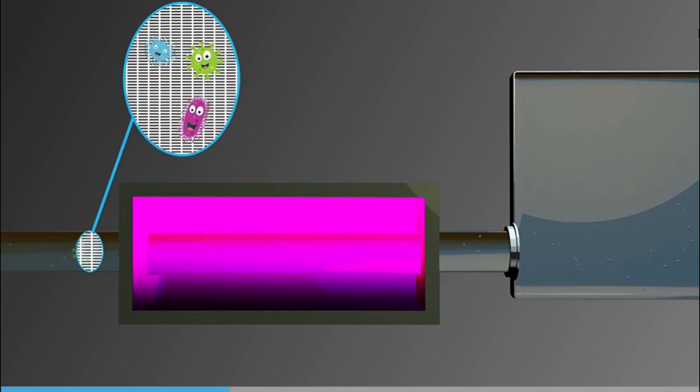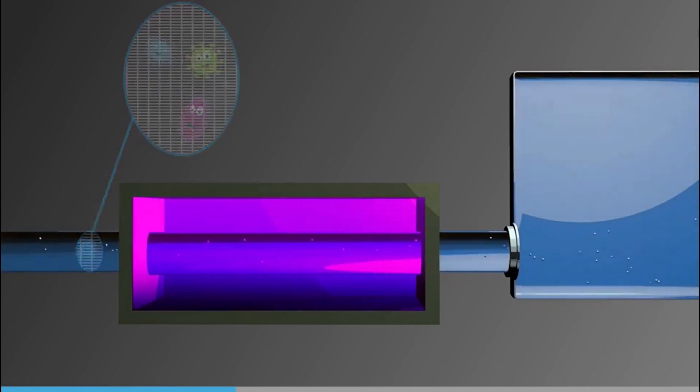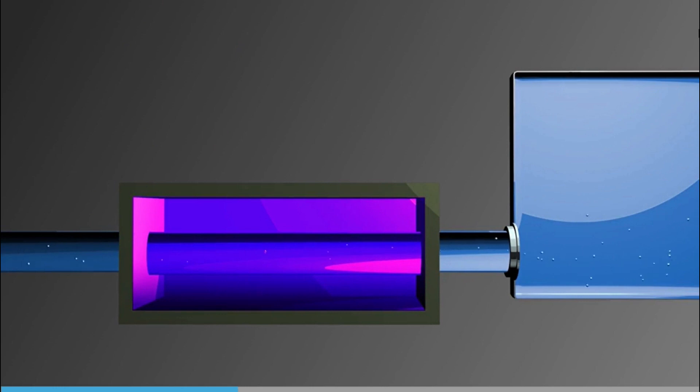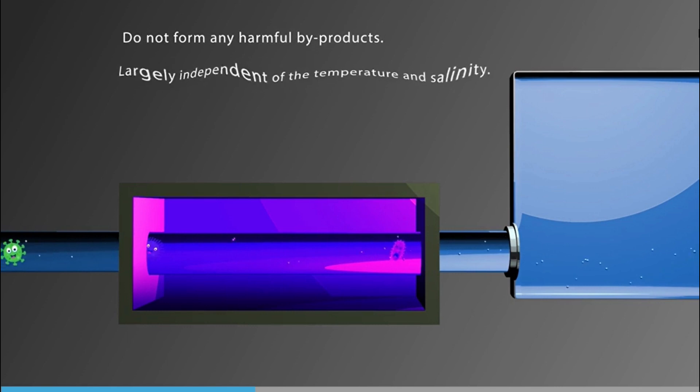A filter is advantageous in waters with high levels of particulate and organic matter, as a large proportion of organisms will be filtered out before processing. Filters which automatically backflush when a certain pressure drop is exceeded may reduce the flow rate and increase the energy consumption in water with high sediment content. UV systems do not form any harmful byproducts and the process itself is largely independent of the temperature and salinity, although UV transmittance is not.